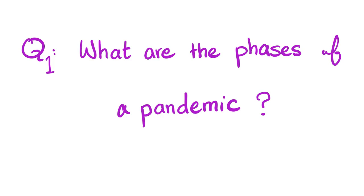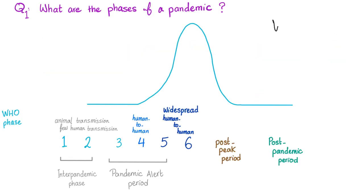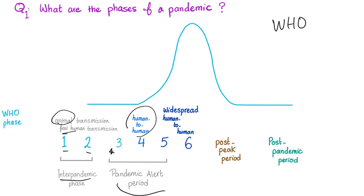What are the phases of a pandemic? The World Health Organization has these phases: Phase 1 and 2 are called the inter-pandemic phase — animal transmission with very few human transmissions. Starting from Phase 3, this is called the pandemic alert period, where human-to-human transmissions start to appear and increase. Phases 5 and 6 are widespread human-to-human transmission, and this is the peak.